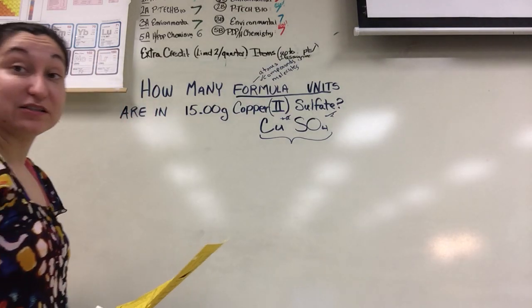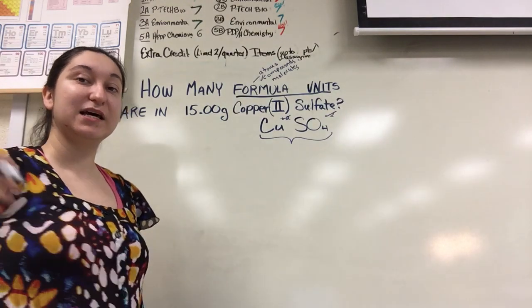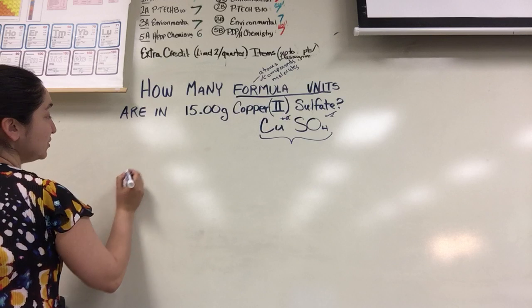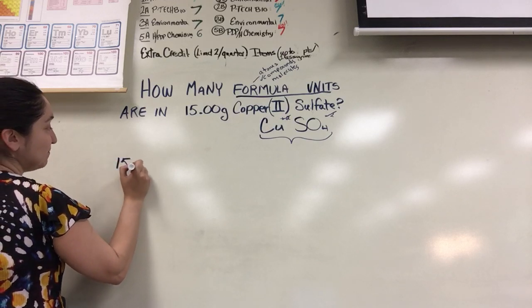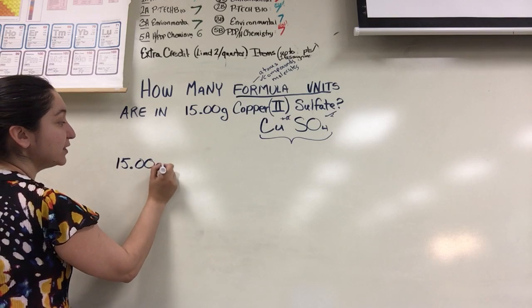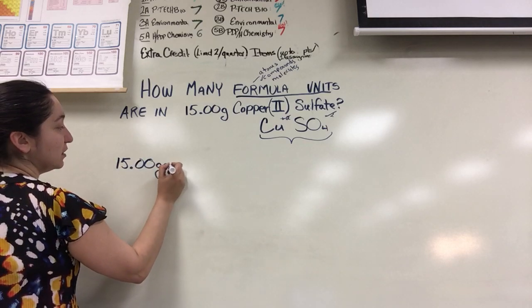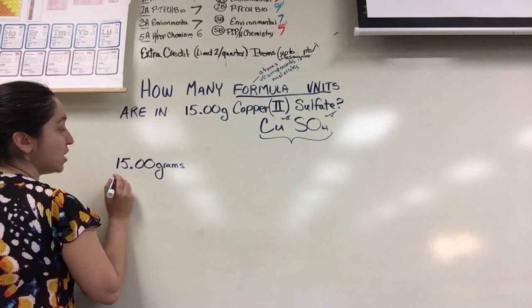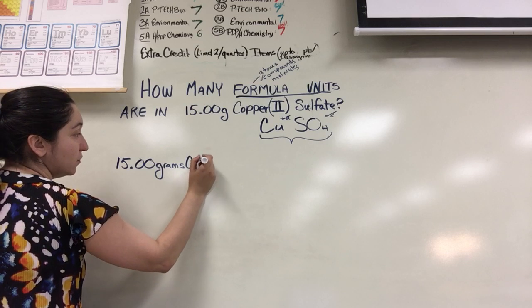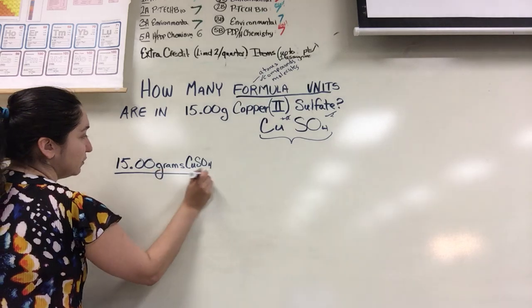So I like to say when you get started with these things, you want to take what you're given and we put it over one. It just sets up our problem. We know that we're going to be talking about a whole number here. So I'm starting with 15.00. Your significant figures are relevant when you're doing calculations. So 15 grams. And I'm going to say exactly what I'm talking about here, which is copper, Cu, copper 2 sulfate, CuSO4.